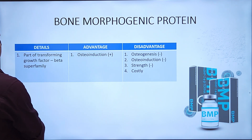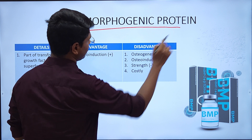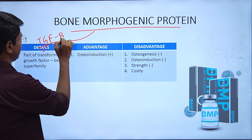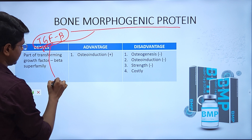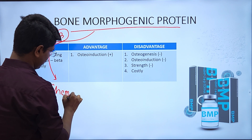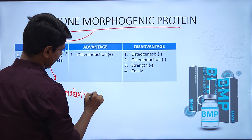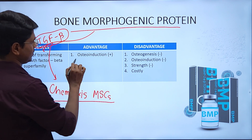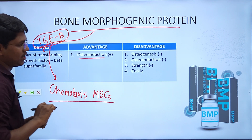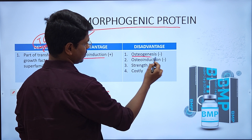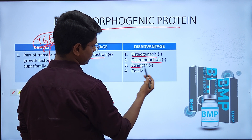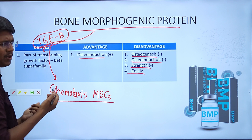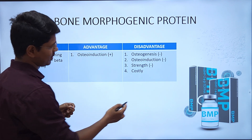Next is BMP — bone morphogenic protein. It belongs to the TGF (transforming growth factor) beta category. This protein is responsible for chemotaxis of mesenchymal stem cells, meaning it has osteoinduction property — specifically a fair osteoinduction property. It has no osteogenesis, no osteoconduction, and no strength. It is very costly and can only be used for research purposes, unless the owner is very wealthy.